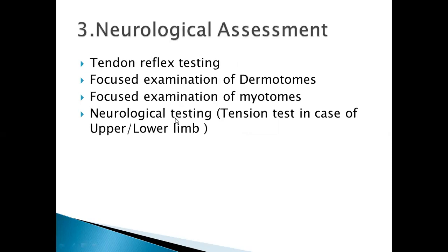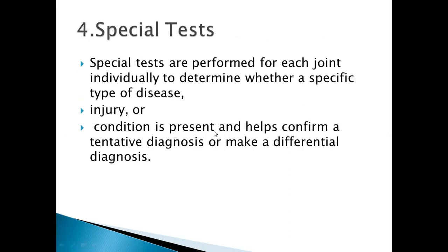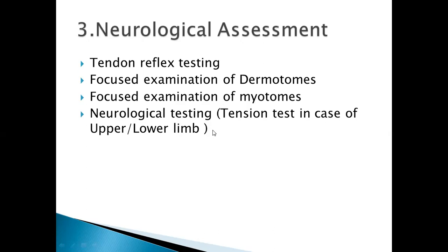Number three is neurological assessment, which has four components: tendon reflex testing, focused examination of dermatomes, focused examination of myotomes, and neurological tension testing. In tendon reflex testing you check upper and lower limb reflexes — in the upper limb you check bicep and tricep reflexes, and in the lower limb you check the patellar tendon and Achilles tendon reflexes.